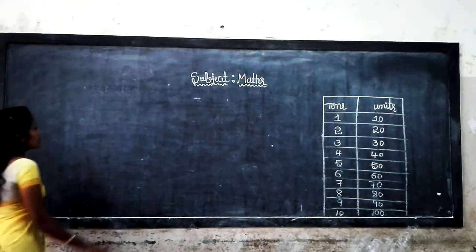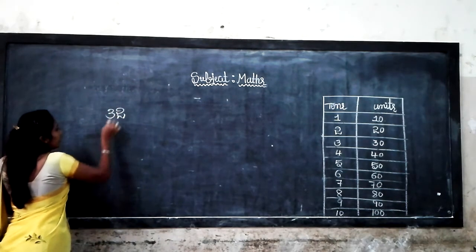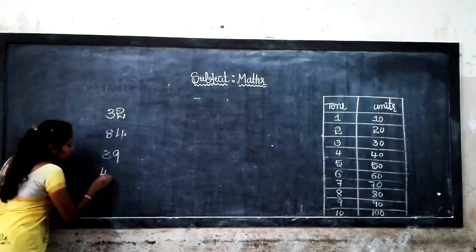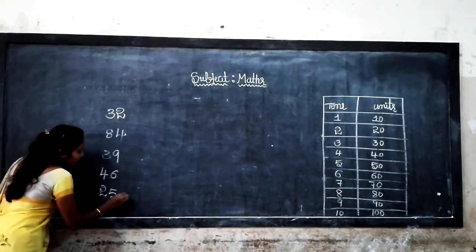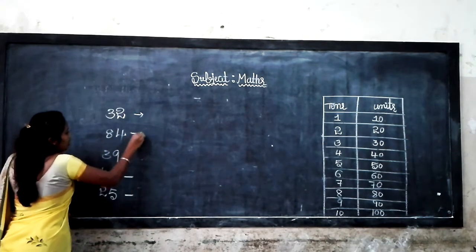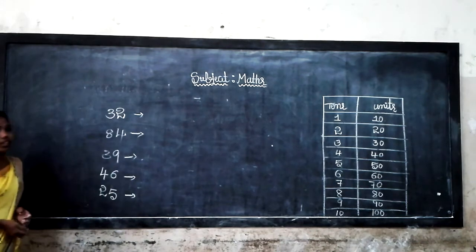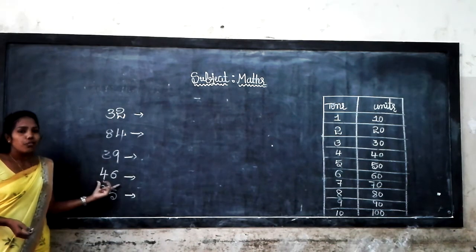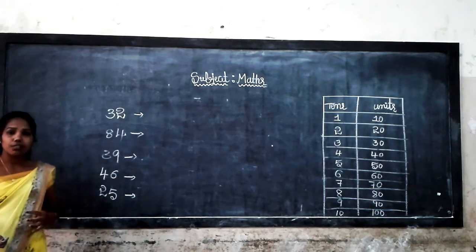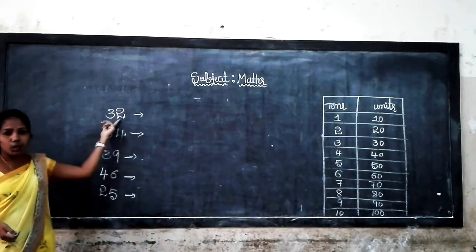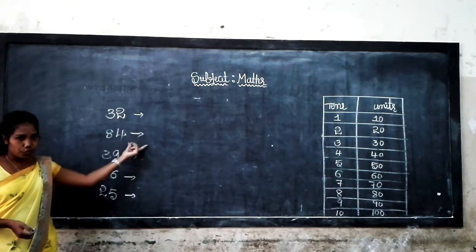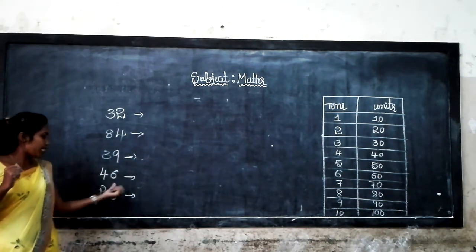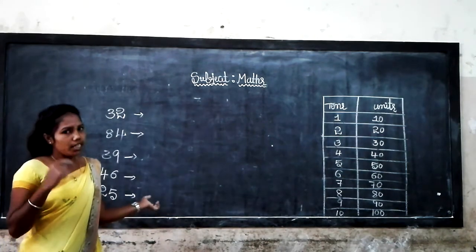First, what are the numbers? 32, 84, 39, 46, and 25. Here are 2-digit numbers: 32, 84, 39, 46, and also 25. There are 2 tens and 2 units in 32. 8 tens and 4 units in 84. 3 tens and 9 units in 39. 4 tens and 6 units in 46. 2 tens and 5 units in 25.